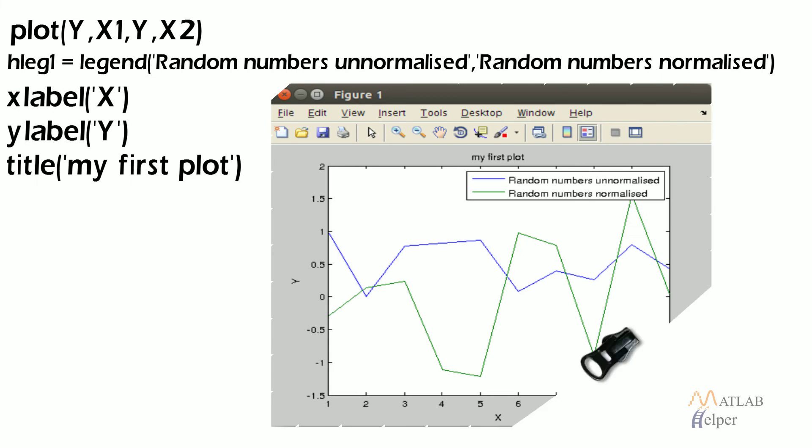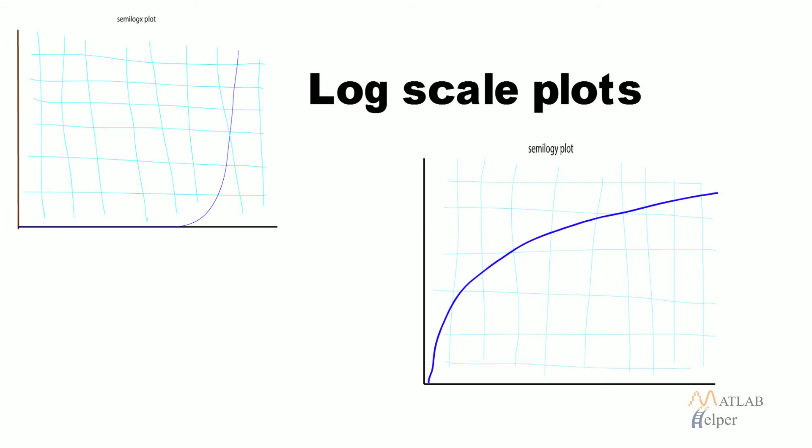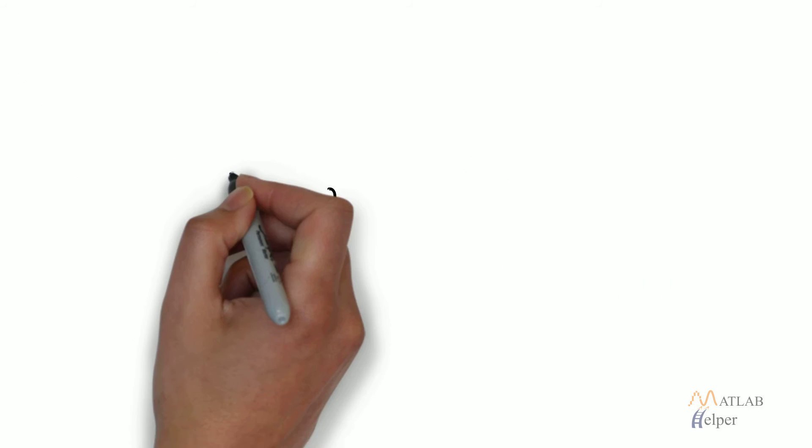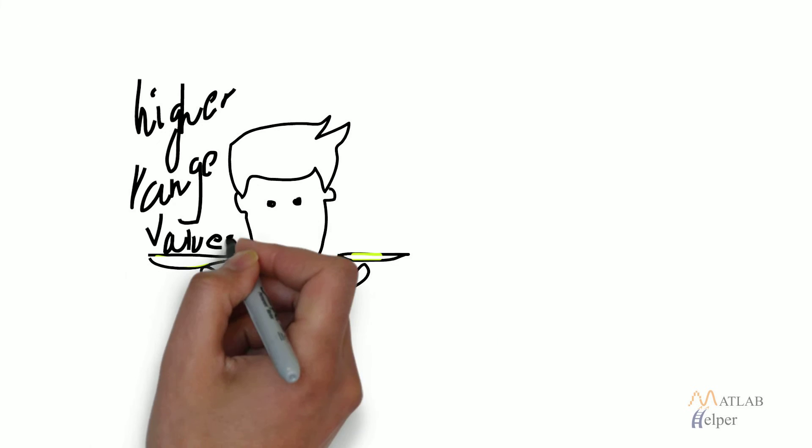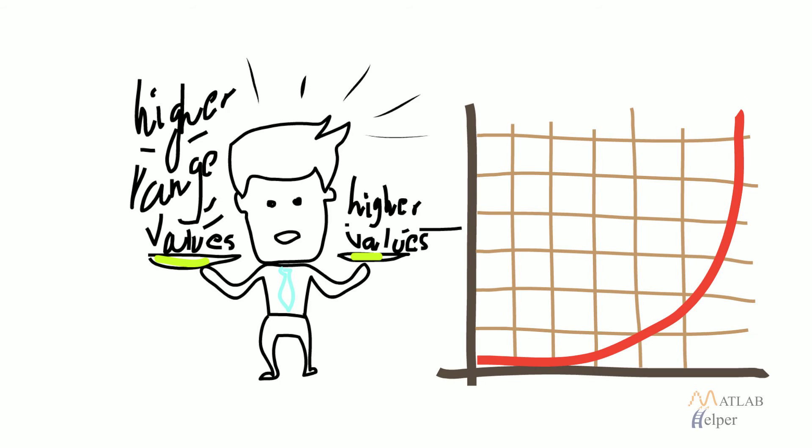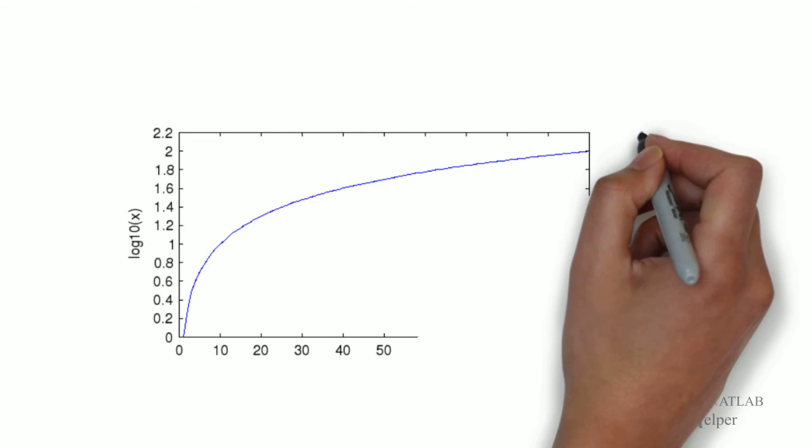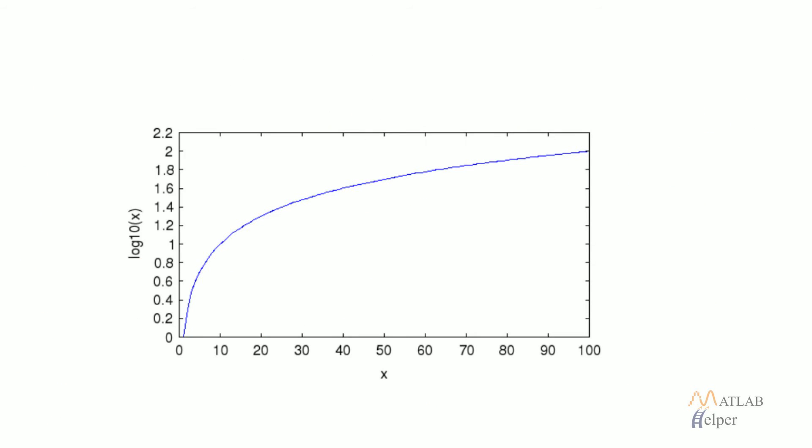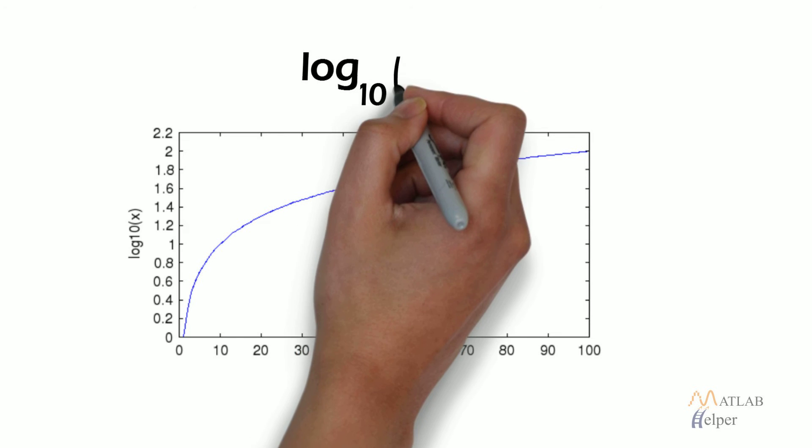Some other important 2D plots are discussed. Log scale plots: When we have to compare values covering a very high range, we can scale our values non-linearly. That will make it easier for comparison. One such non-linear scaling is log scale with a log of base 10.